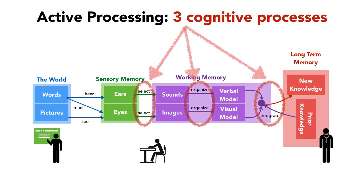Active processing is really three different cognitive processes. Working memory, in addition to storing information, is responsible for selecting which sensory information we want to pay attention to, making sense of that information by organizing it into models, and finally integrating it with stuff that we knew from before. All of this processing, plus the things we had to remember, are together called cognitive load.